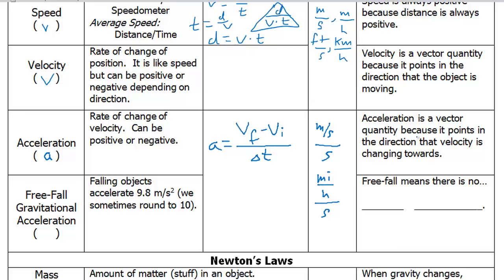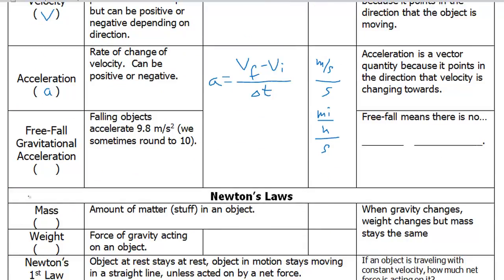Let's take a look at specifically the type of acceleration when something is free falling. The symbol we use for that is G, lowercase g. And we know that falling objects accelerate 9.8 meters per second squared. We sometimes round to 10.